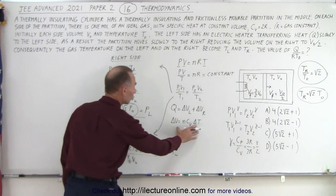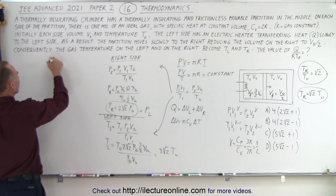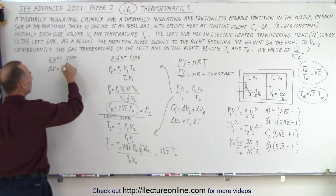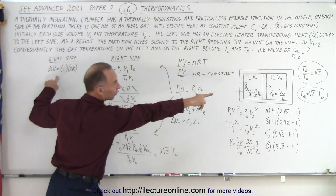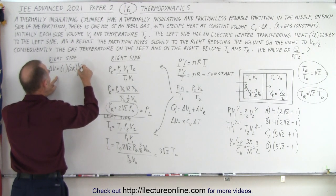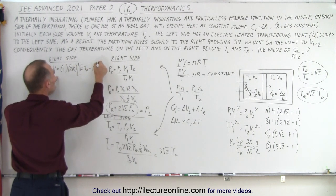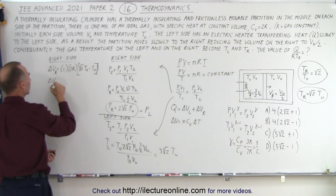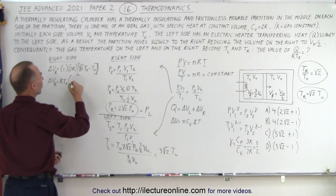Finally, we can calculate the change in internal energy. For the right side, delta U equals 1 mole times C sub V (which is 2R) times the change in temperature: the square root of 2 times T sub nought, minus T sub nought. Factoring out R and T sub nought, delta U on the right equals R·T sub nought times (2√2 − 2).